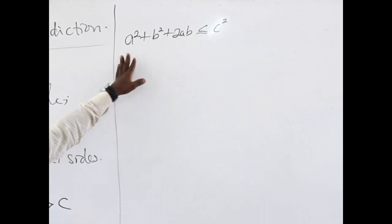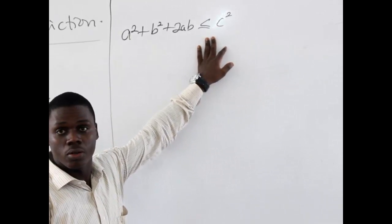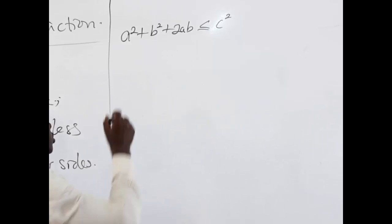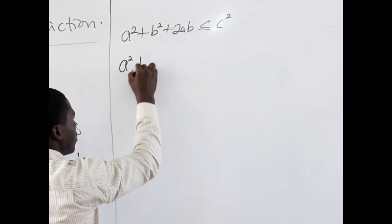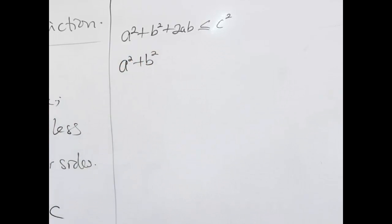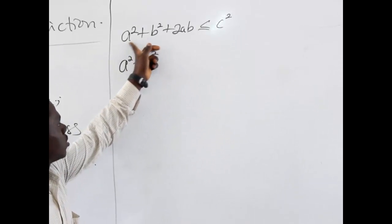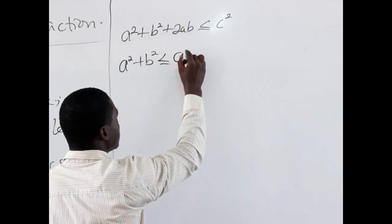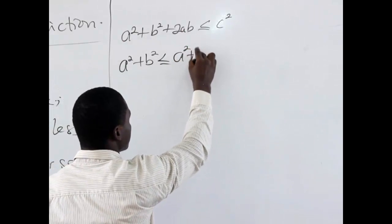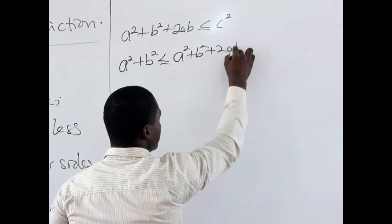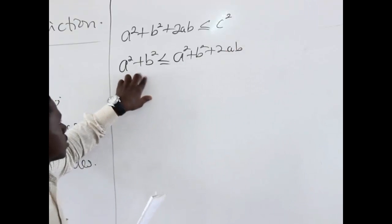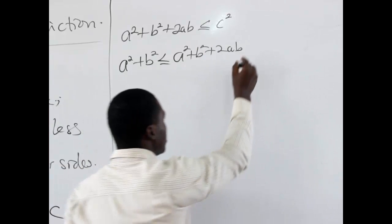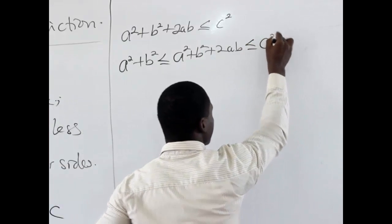When we look at this, A squared plus B squared plus 2AB is less than or equal to C squared. But notice that A squared plus B squared alone is going to be less than or equal to all of A squared plus B squared plus 2AB. So this portion alone — A squared plus B squared — is less than or equal to C squared.